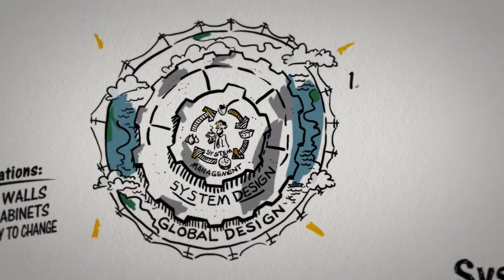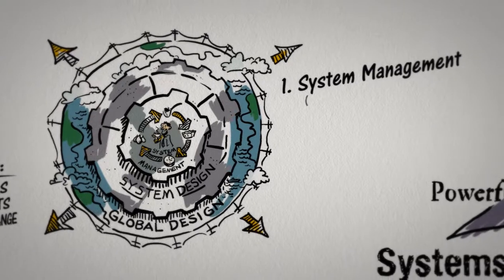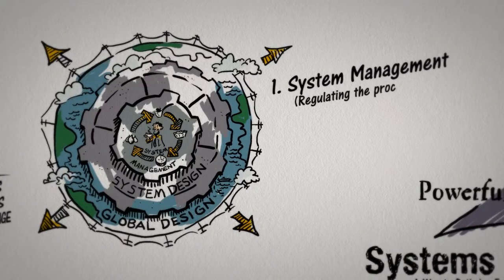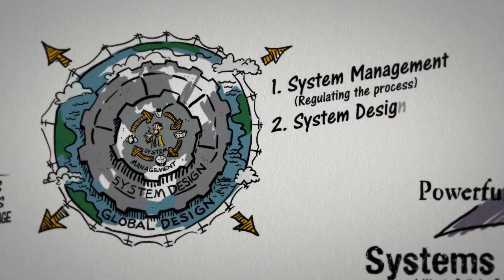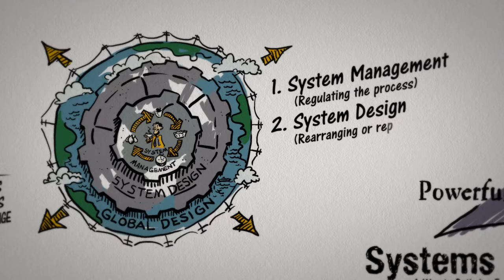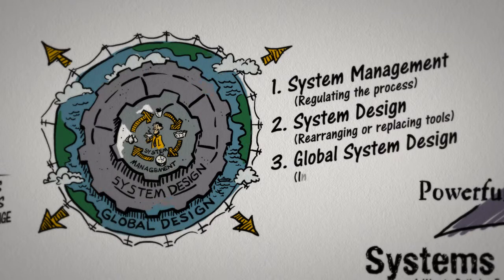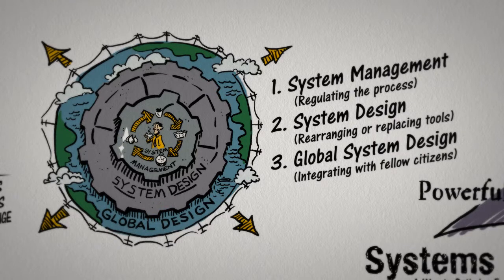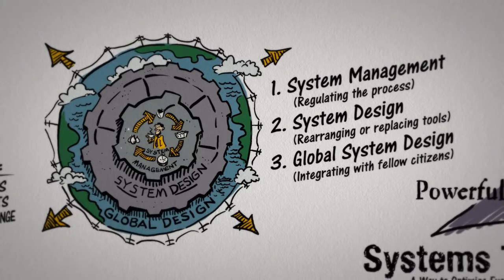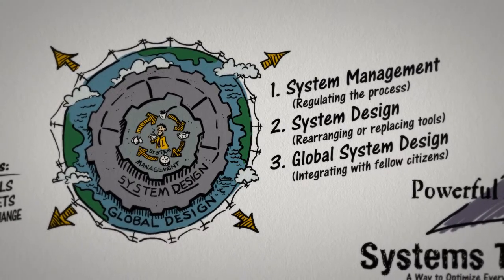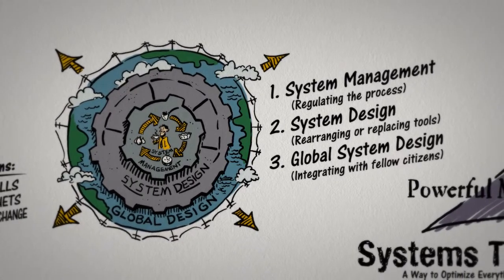Regulating the process of making the cup of coffee is system management. Rearranging or replacing the tools is system design. Integrating with fellow citizens for a common supply of water, electricity, and sewage is global system design. You can control some structures more than others, which guides us to focus more on factors that are significant and within our sphere of influence.